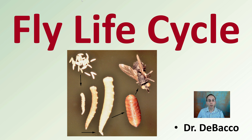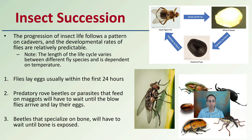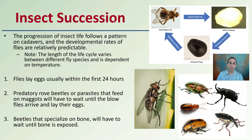Welcome to this video on DeBacco University looking at fly life cycle and how it may relate to forensic science. The reason why we'd be interested in insects, particularly in relation to forensics, is that they have a certain succession or progression that they go through. The progression of insects' life follows a pattern on cadavers, and development rates of flies are relatively predictable.